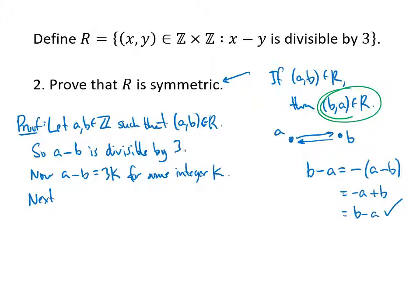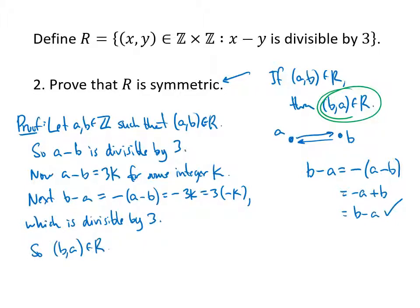So next, what I want to do is use that. b minus a is minus (a minus b). So that's minus 3k. And remember, I want to factor out a 3 here because I want this to be divisible by 3. So I write that as 3 times minus k. And that's divisible by 3, which means that (b,a) is in my relation, just like I want it. So that proves that if-then statement.